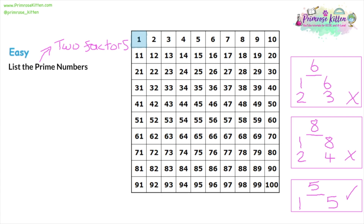To start our method, going through each number one at a time — let's look at two. Two is a prime number; you can divide it by one and by two, so it has two factors. Now, what this means is any other number in the two times table cannot be a prime number, because every number in the two times table can be divided by two, giving it a third factor.